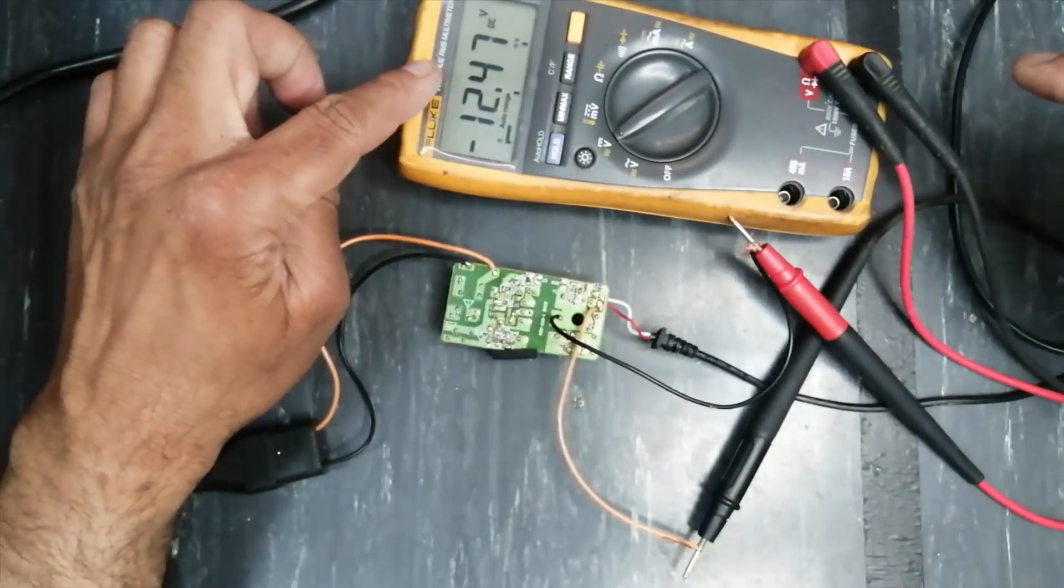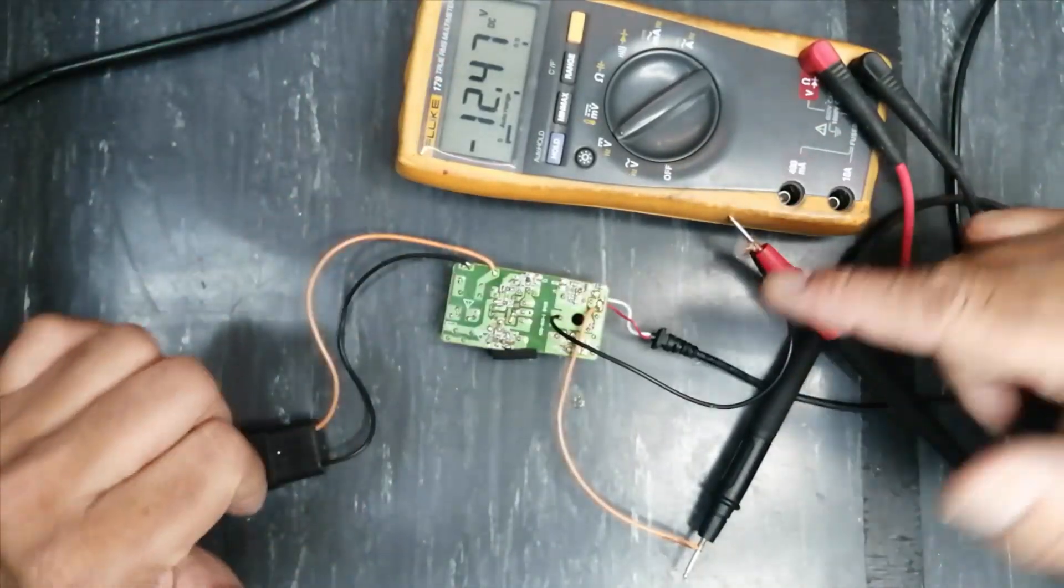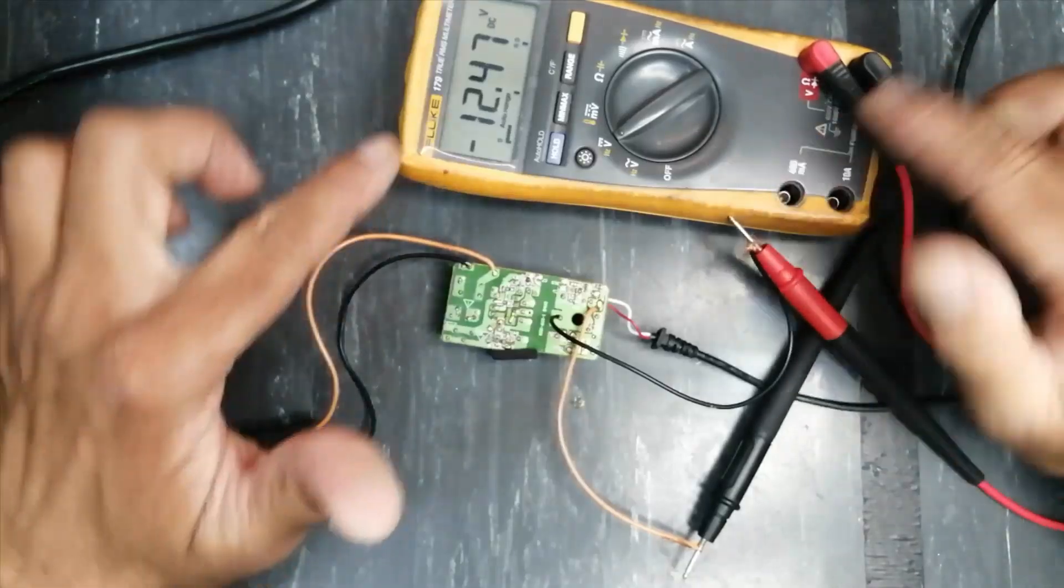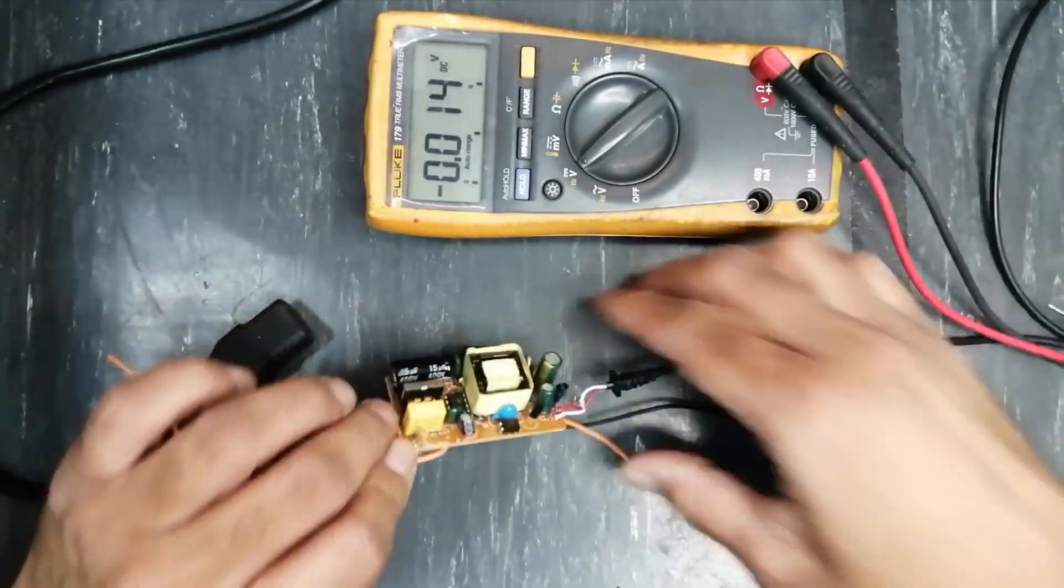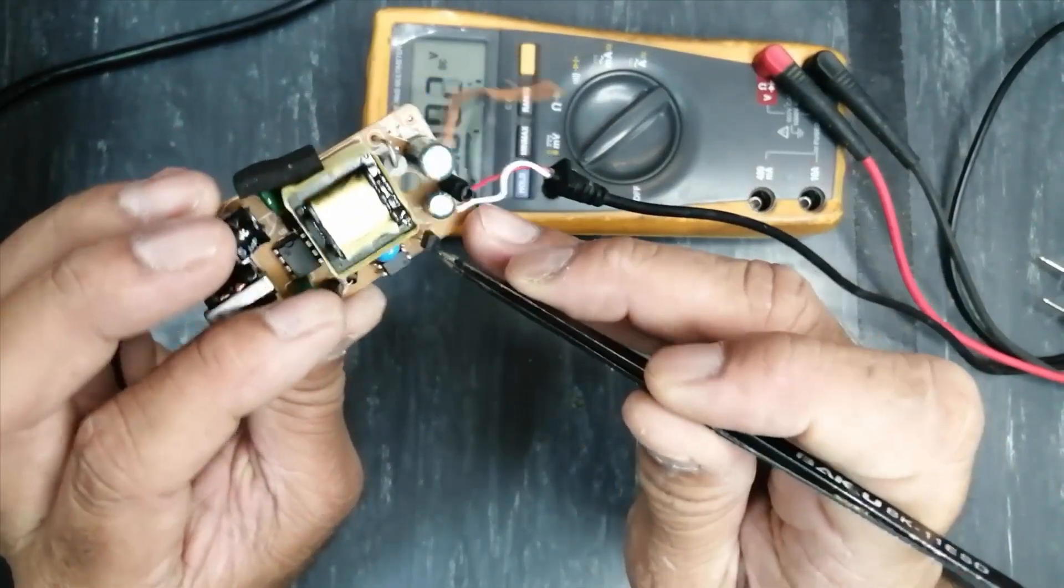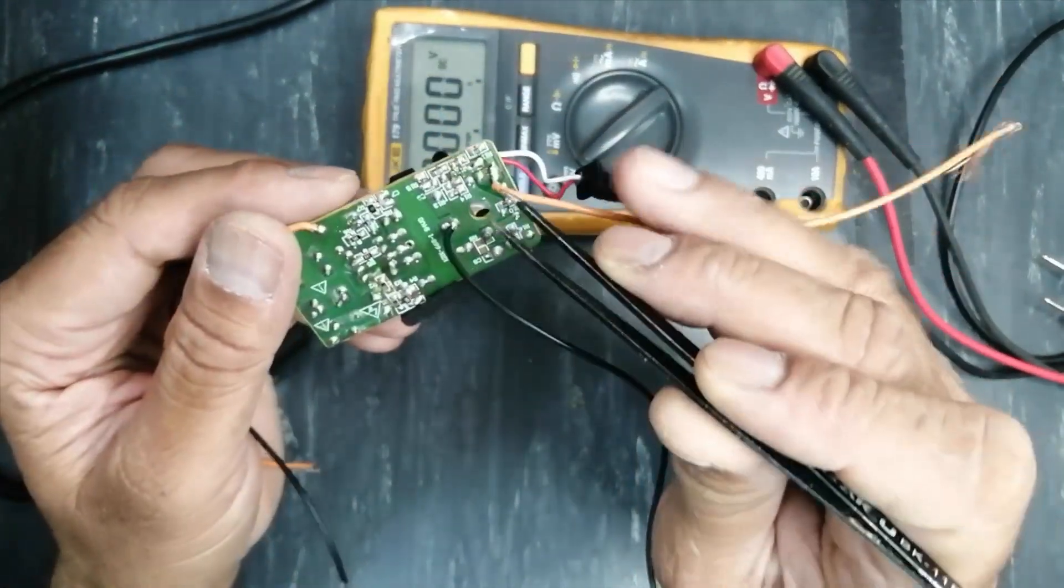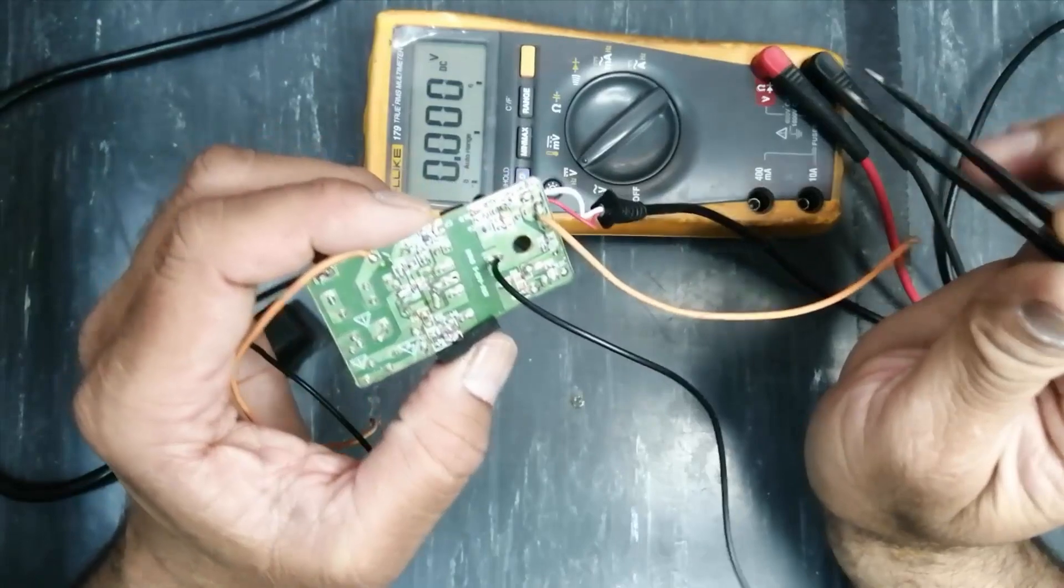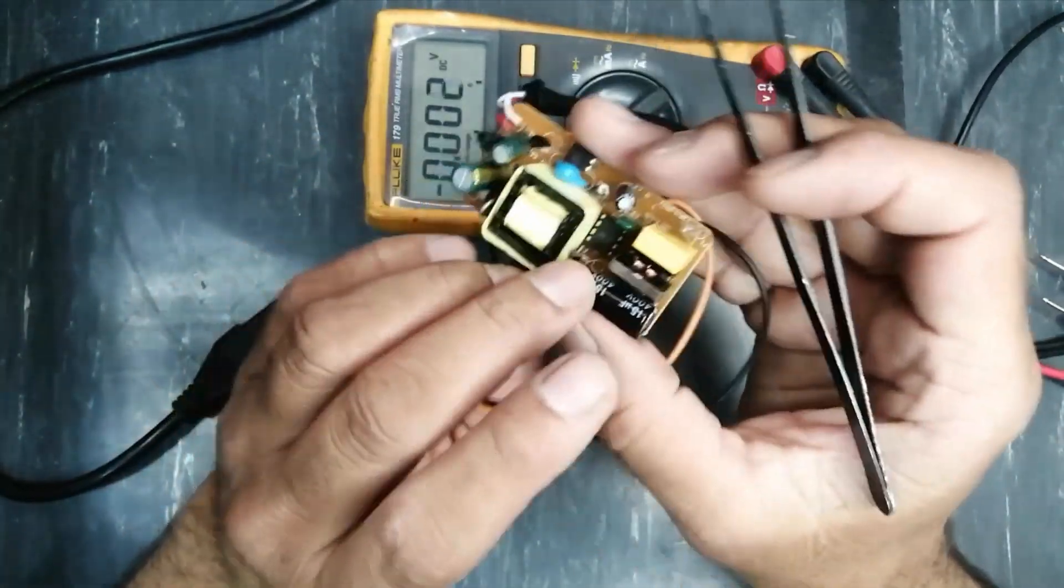We have 12.4847 volts. Now we have to adjust. We have a very simple solution: just locate the voltage reference TL431, the reference pin. That is pin number one. If you locate it in this way, it is TL431A pin number one.